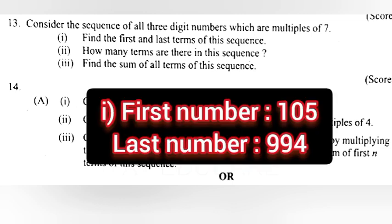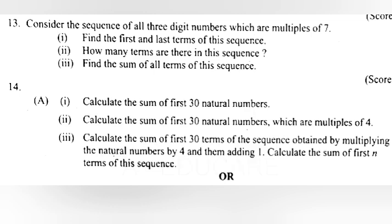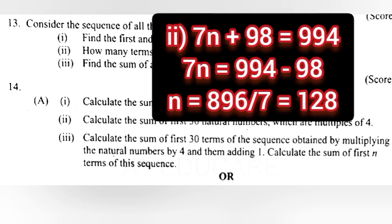Answer. 1. First number 105. Last number 994. 2. 7n plus 98 equal 994. 7n equal 994 minus 98. n equal 896 by 7 equal 128.